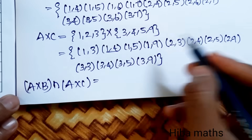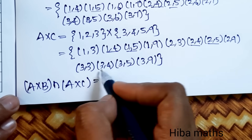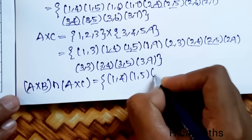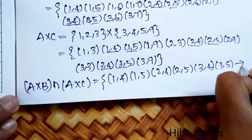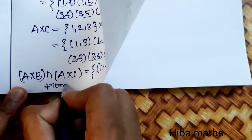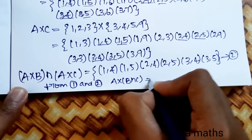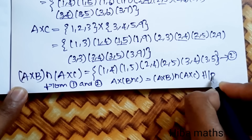Comparing A×B and A×C, the common elements are: (1,4),(1,5),(2,4),(2,5),(3,4),(3,5). This matches our LHS result. So from result 1 and 2, A×(B∩C) = (A×B)∩(A×C). Hence proved.